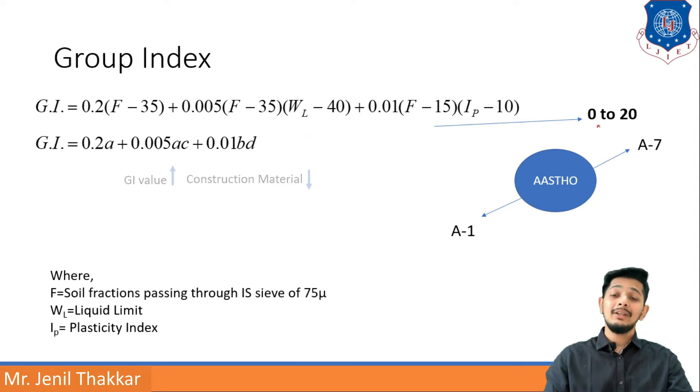If GI value is very much higher, the quality or the construction material strength will be lower. So if you are having GI 0, it will be very good for construction of road. If it is having maximum value, then construction material will be most poor.